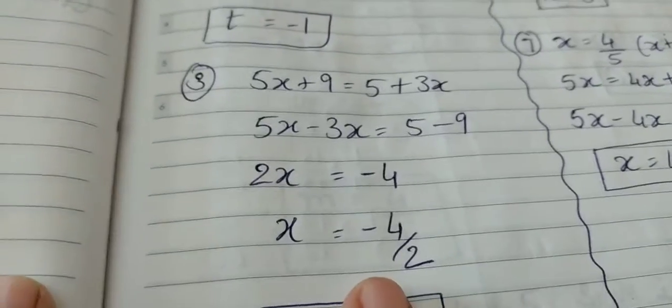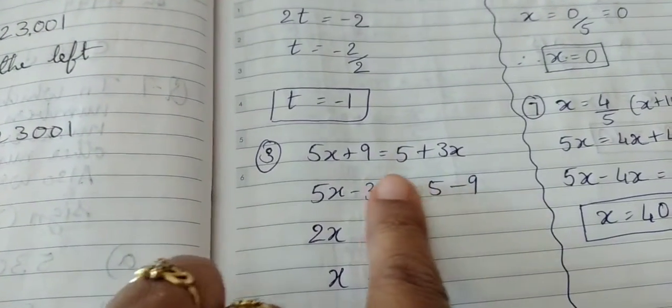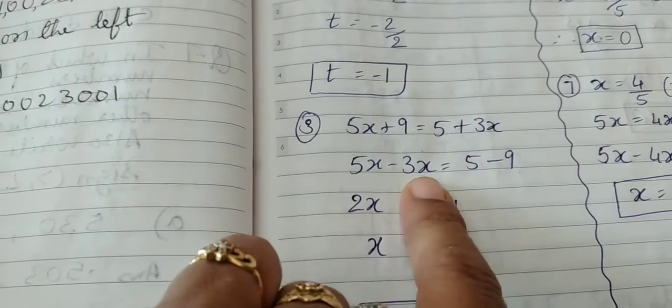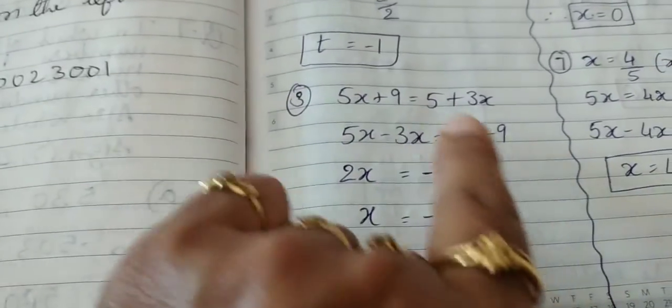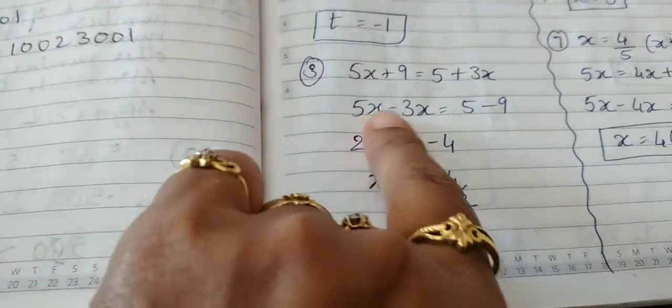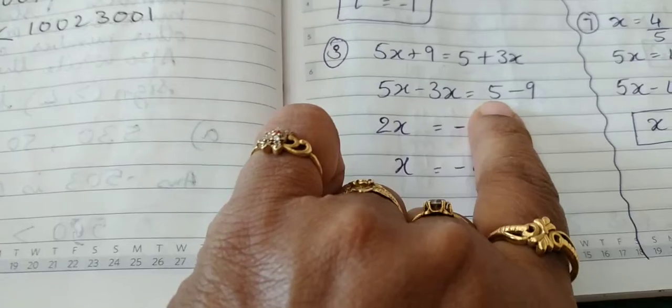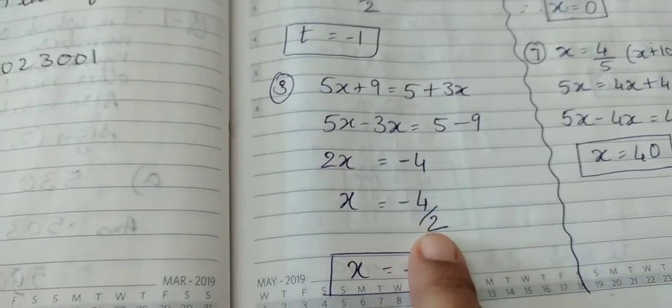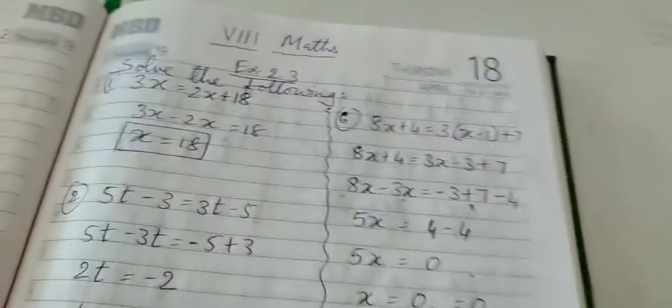Now the third equation. These are similar type of sums you can see, where you have to bring only the like terms closer and carry out the calculation. 5x plus 9 equals 5 plus 3x. As usual bring 3x towards 5x and 9 towards 5, so the sign changes. 5x minus 3x is 2x and 5 minus 9 is minus 4. When you subtract bigger from smaller number, you get a negative answer. So x is equal to minus 4 by 2 and x is equal to minus 2.